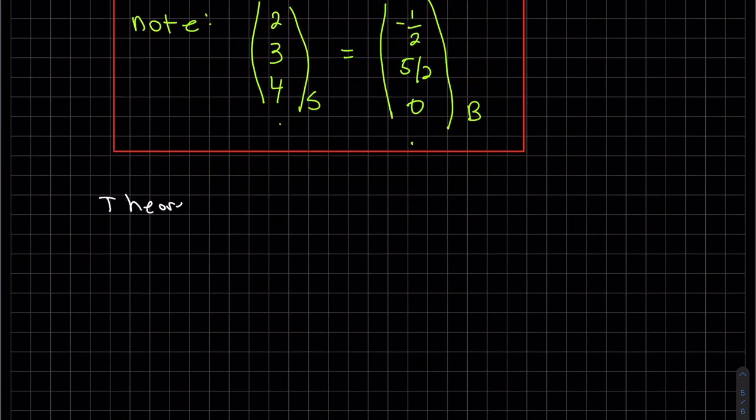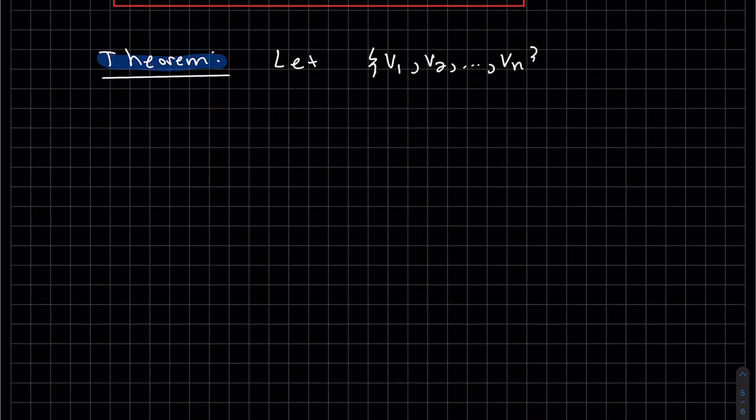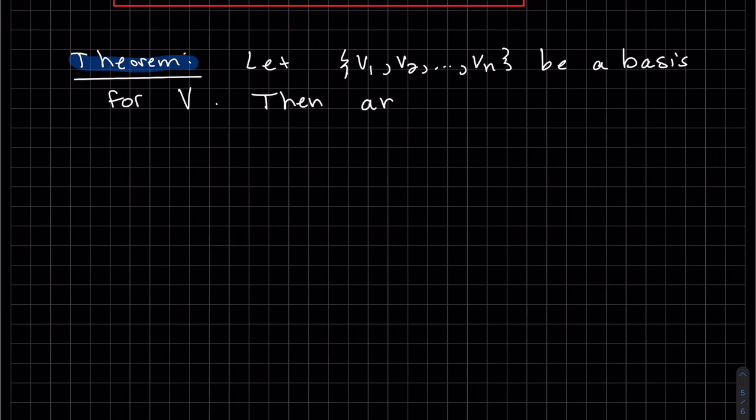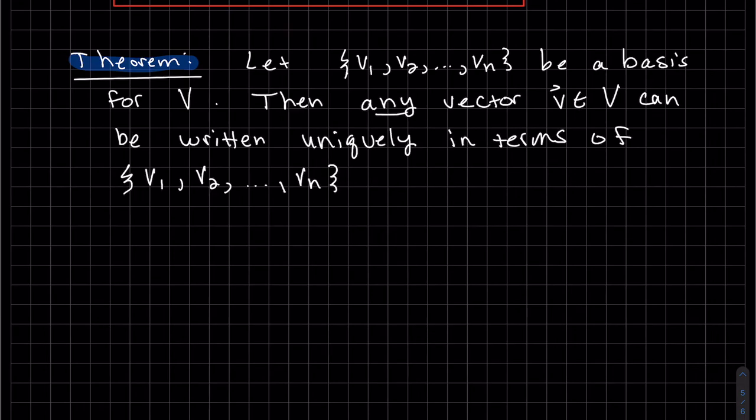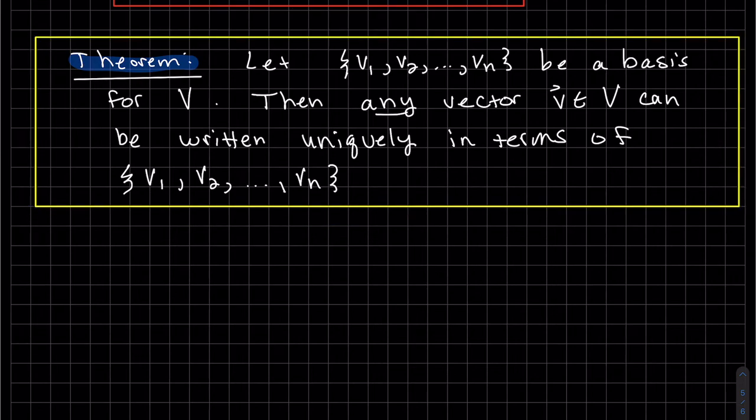One more theorem. So if we have a set that's a basis for V, then any vector V can be written uniquely in terms of that basis. So uniquely means there's only one way of writing it. So our proof is going to be proof by contradiction.